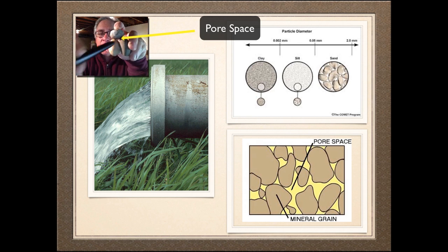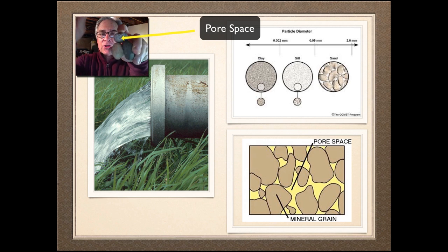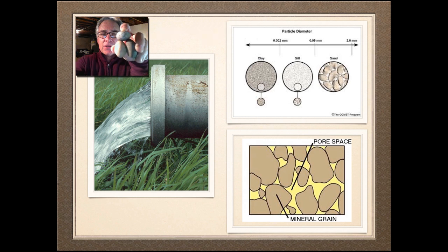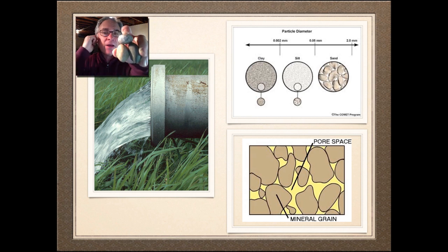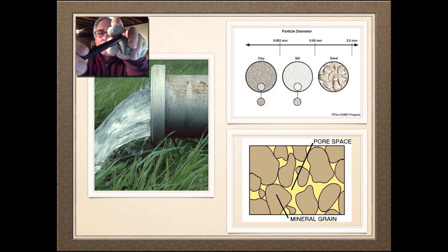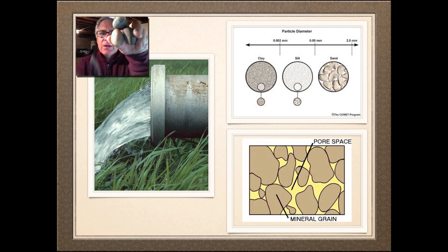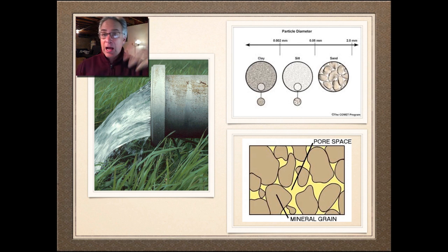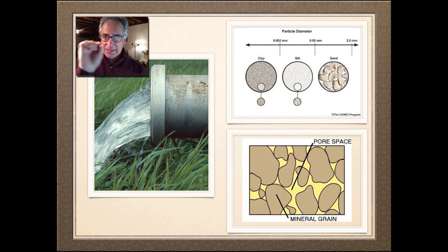If it's in an aquifer it's probably filled with water, or at least most of the time. As the water table fluctuates in one of the aquifers, pore spaces will be filled up or emptied depending on whether water is pumped out or recharged by some source. So these three particles are the soil mineral, and the space between them is the pore space that fills with water. That's the workhorse of the aquifer — the pore space.